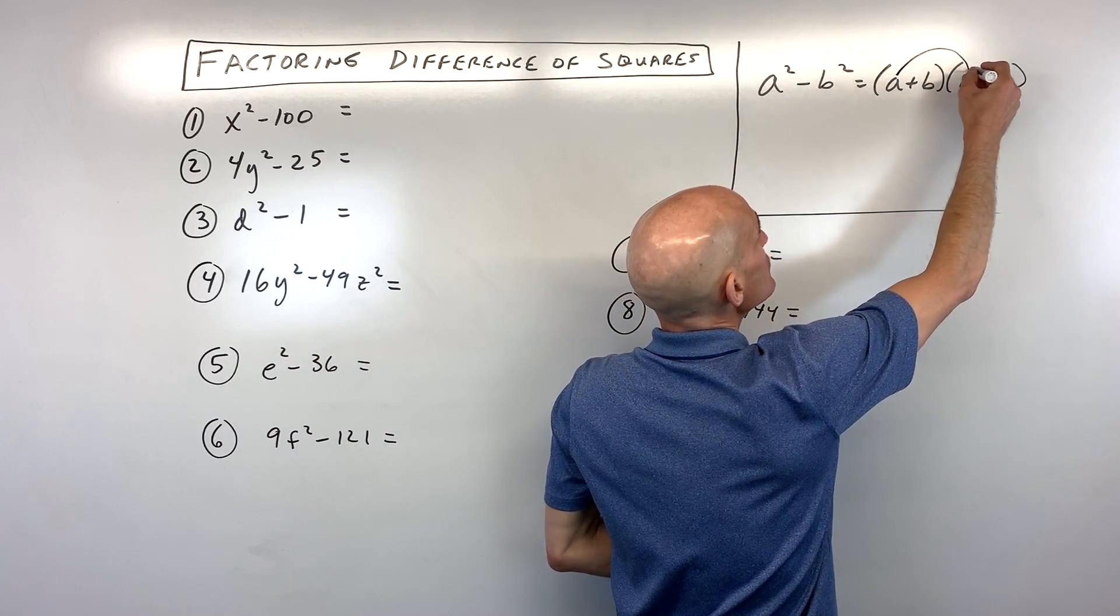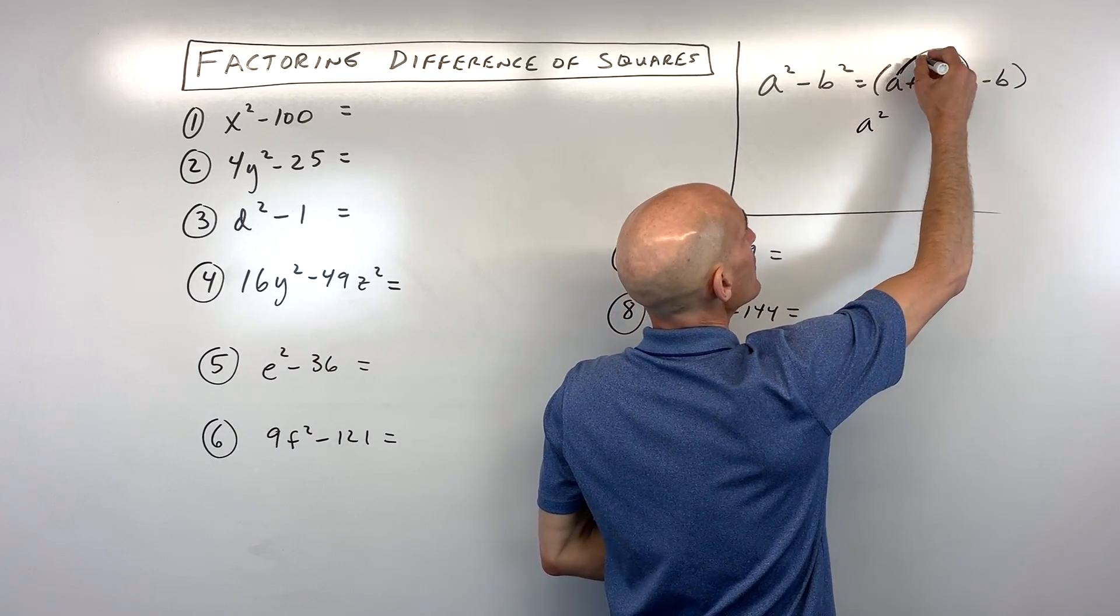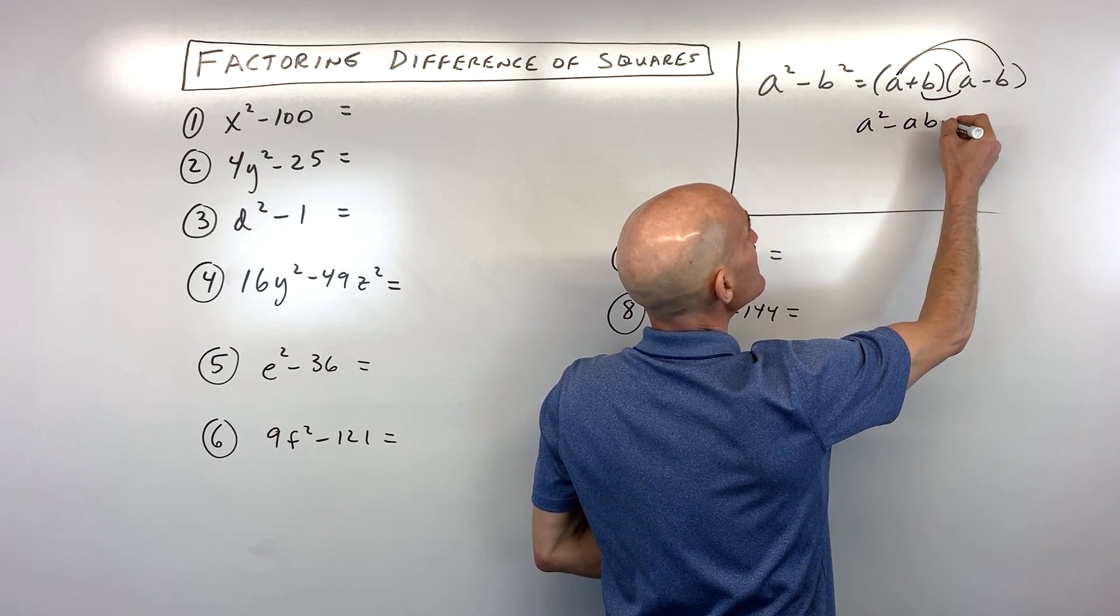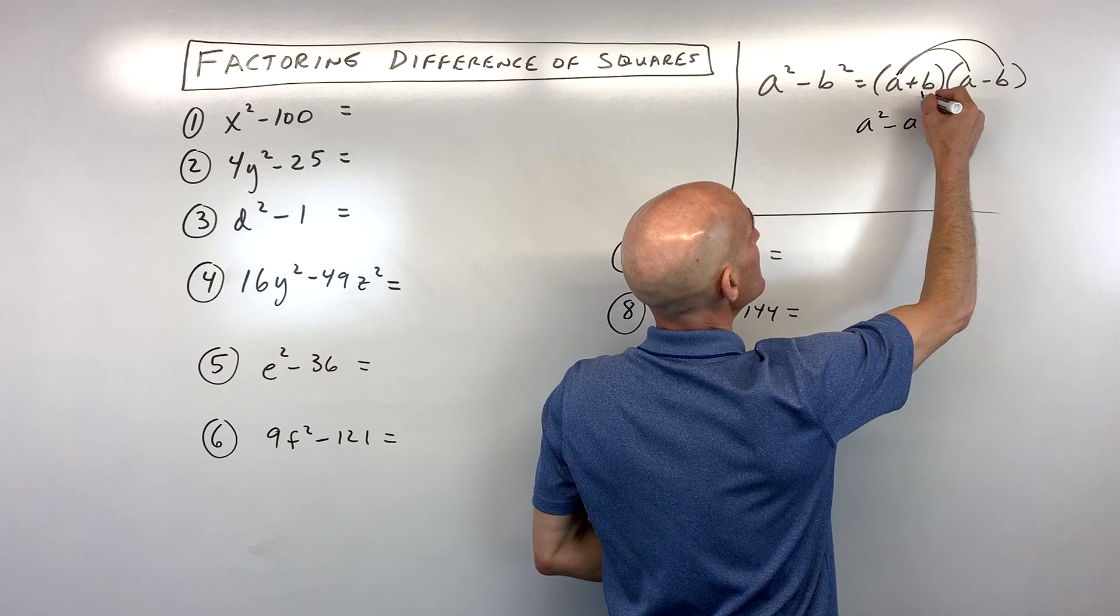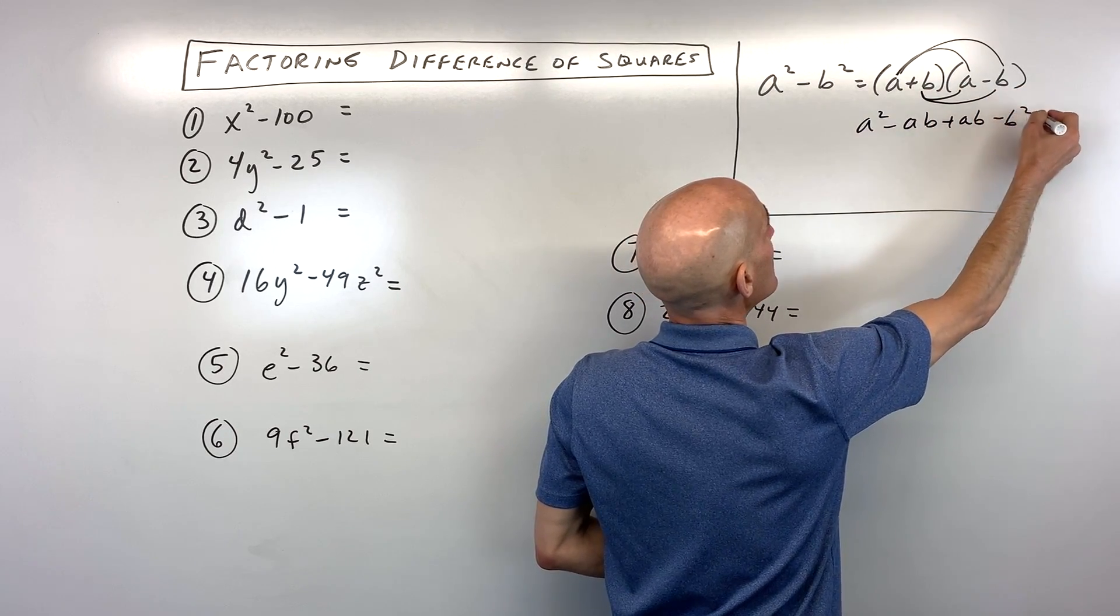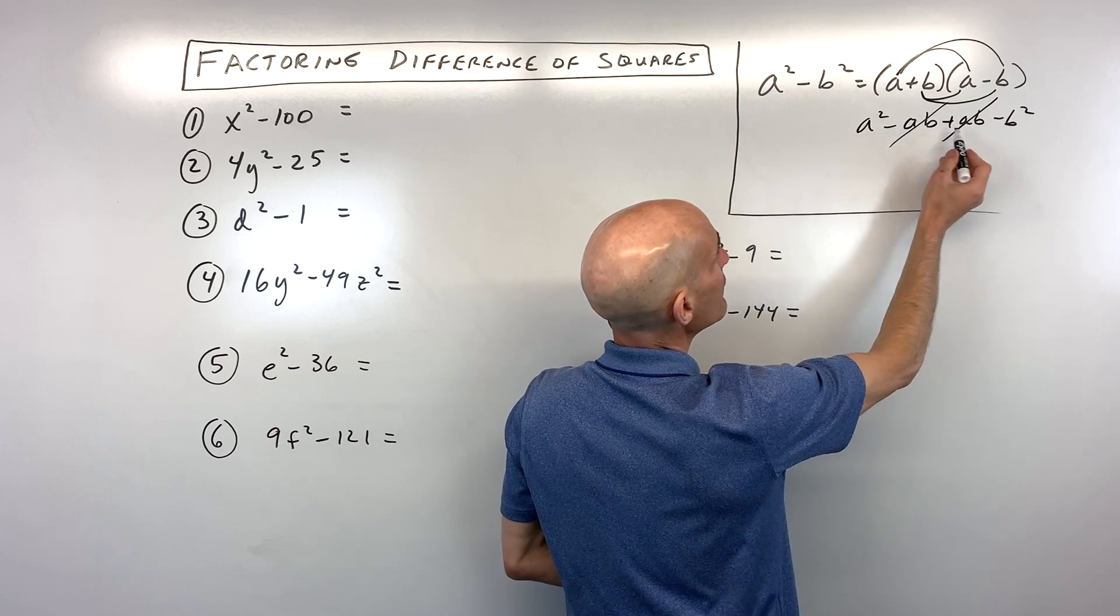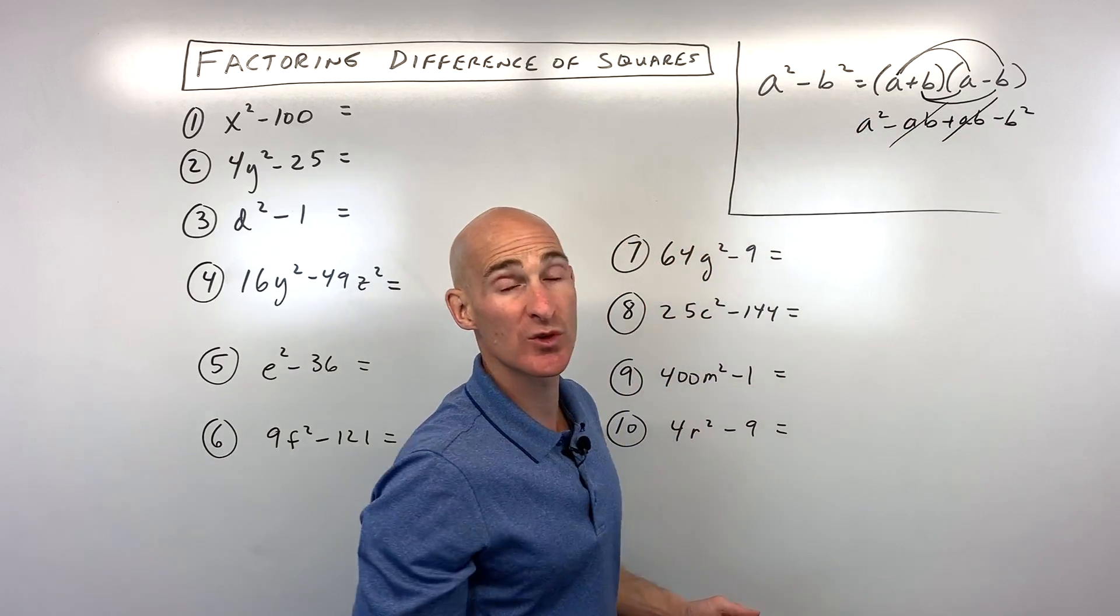Well, let's just say we distribute: a times a is a squared, a times negative b is negative ab, b times a is positive ab, and b times negative b is negative b squared. And see how the ab and negative ab cancel, and we're left with a squared minus b squared, which is what we started with.